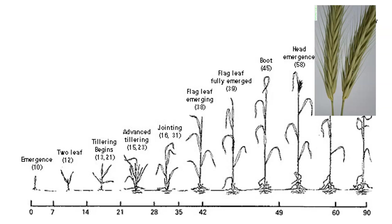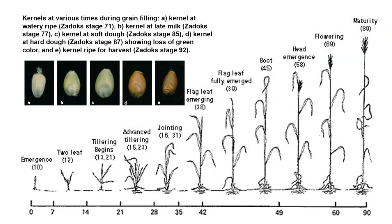After inflorescence production, we start looking at the grain, and grain has various stages in it as well. This shows you kernels at various times during grain filling. The first stage is kernel at watery ripe — this is where you have the ovary, it's just getting pollinated, and the ovary itself is kind of soft and watery. Then you've got kernel at late milk, which means rather than having just watery ovary material, you're starting to get starch accumulation and it starts looking milky. If you pressed on it with your finger, it would actually come out milky.